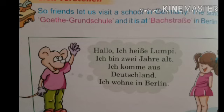Let's start the conversation. The first sentence is: 'Hallo, ich heiße Lumpi.' Hello — 'ich' means I, 'heißen' is a verb which means to call or to be named — so 'Hello, my name is Lumpi.' Next: 'Ich bin zwei Jahre alt.' 'Ich bin' means I am, 'zwei' means two, 'Jahre' means years, 'alt' means old — so I am two years old.